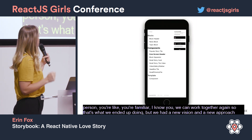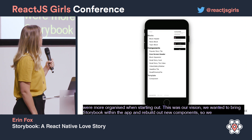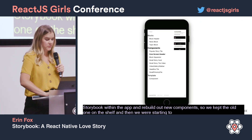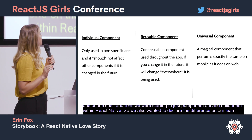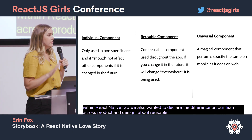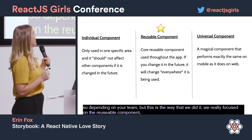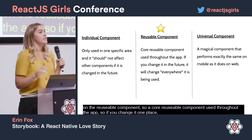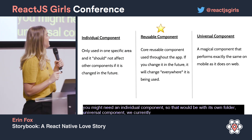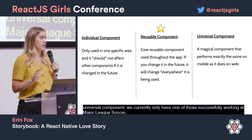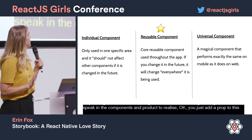Our new vision was to bring Storybook within the app and rebuild new components, keeping the old one on the shelf and pumping them out within React Native. We also wanted to declare the difference across our team — product and design — between reusable, universal, and individual components. We focused mainly on the core reusable component used throughout the app: if you change it in one place, it changes everywhere. Sometimes you need an individual component in its own folder, or a universal component. It was great for getting design to speak in components and product to understand — oh, can you just add a prop to this component? And we'd say, whoa, let us figure that out.